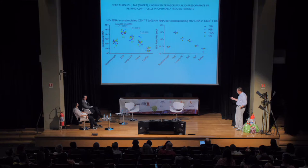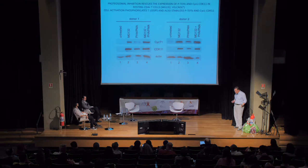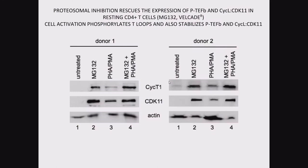How can we approach the problem that both P-TEFb and Cyclin-L CDK11 are missing in resting cells? One way is by adding PKC agonists like PHA, PMA, or activating the T cell receptor. In two different individuals' peripheral blood mononuclear cells — actually CD4 cells — there is basically no P-TEFb and no CDK11. But if you add proteasomal inhibitors like MG132, Bortezomid, or Velcade, you can rescue the expression of both P-TEFb and Cyclin-L CDK11 in both cases, pretty equivalently to what you get through optimal T cell activation.